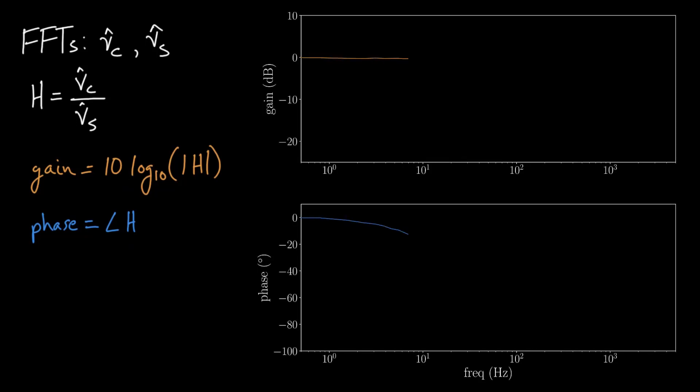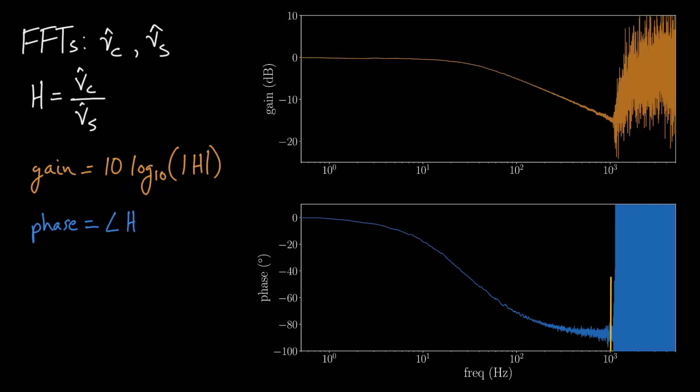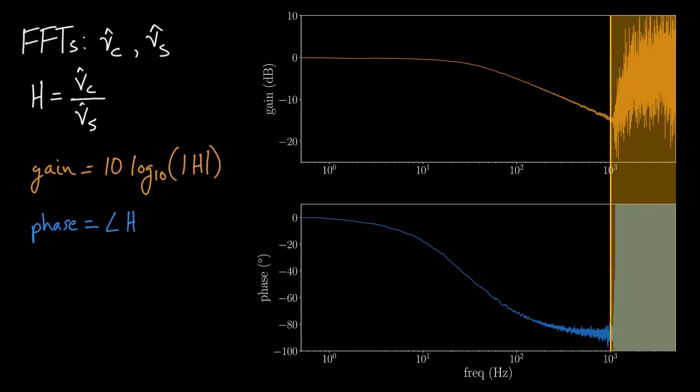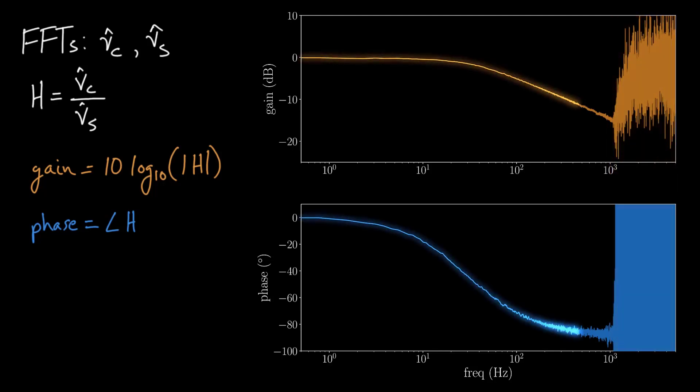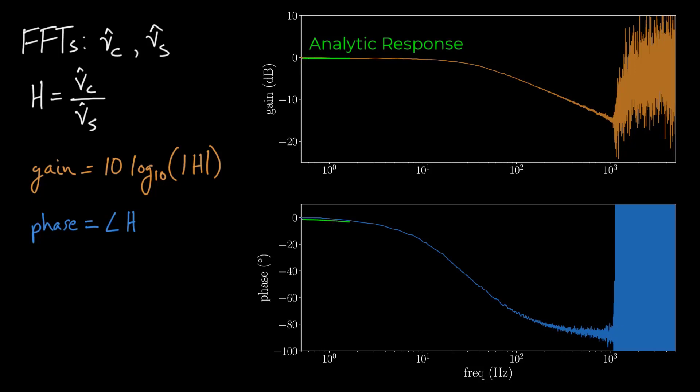Here are the plotted curves. You can see that after 1 kHz, where the chirp signal stopped, there's no usable data. But in the rest of the range, we see the characteristic low-pass filter curve. Compare that to the analytic Bode plot for this circuit. Surprise! They actually match!